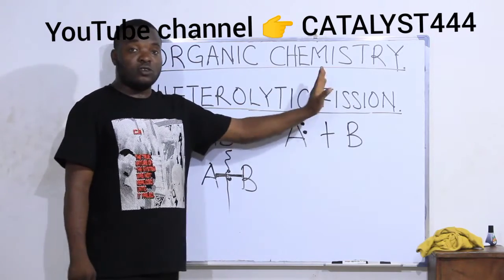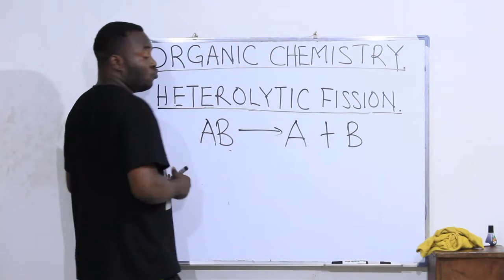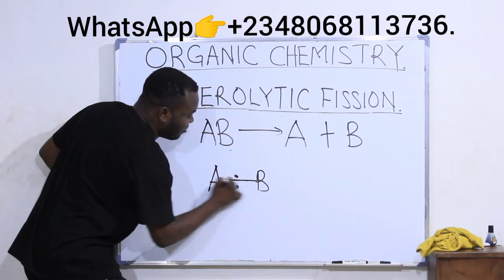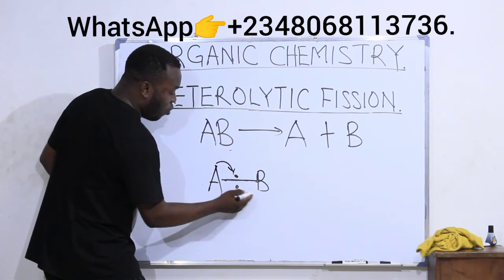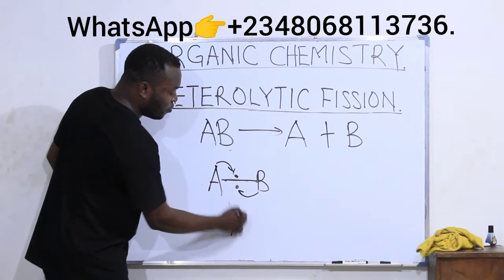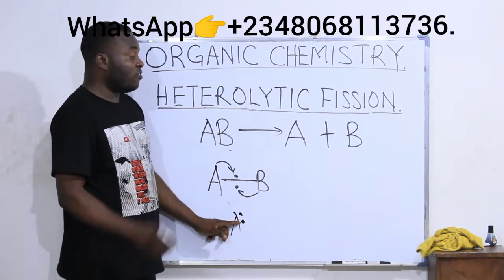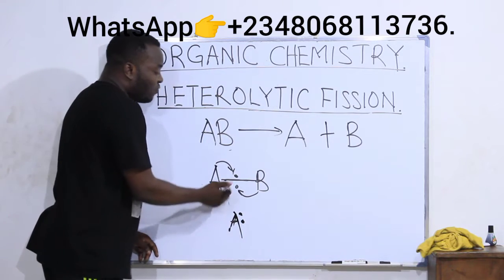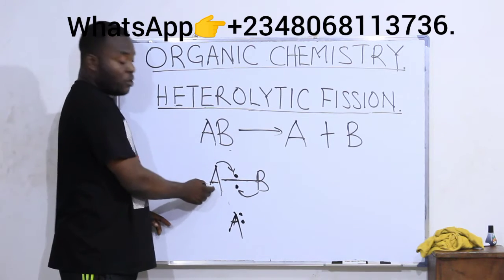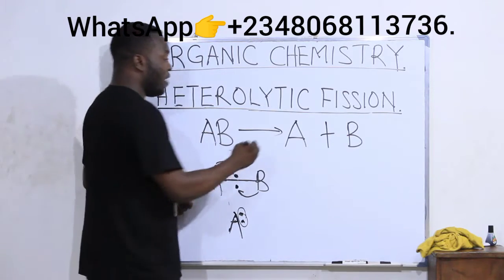Let's look at what A and B have after breaking. A took the two electrons, but the number of electrons A actually gained is only one — because one of those electrons originally belonged to A. So A took its own electron and also took the one that belonged to B. Out of these two electrons, A gained only one; the other one belonged to A originally.